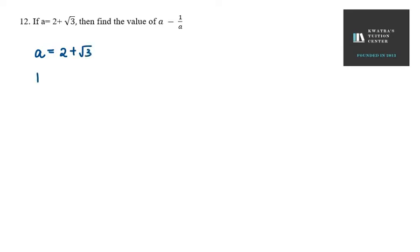But we have to take 1 over a value. So, 1 over a will be 1 over 2 plus under root 3. Now we have to see what we have to do with 1 over a. Here we have to apply rationalize method.